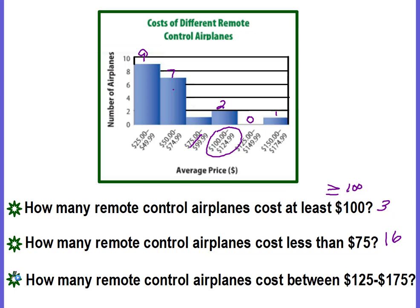How many remote control airplanes cost between $125 and $175? Let me change my color here. $125 starts right here and here is the $175. So it would be these two intervals and there is only one airplane.